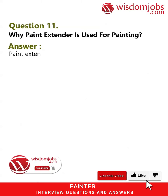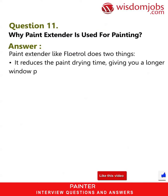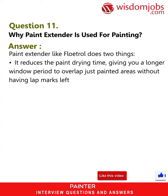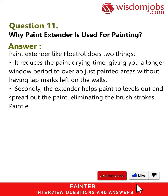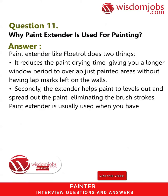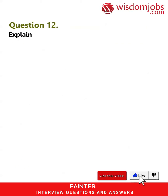Question 11: Why is paint extender used for painting? Answer: Paint extender, like Floetrol, does two things. It reduces the paint drying time, giving you a longer window period to overlap just-painted areas without leaving lap marks on the walls. Secondly, the extender helps the paint to level out and spread, eliminating brush strokes. Paint extender is usually used when painting cabinets, drywall, and so on.